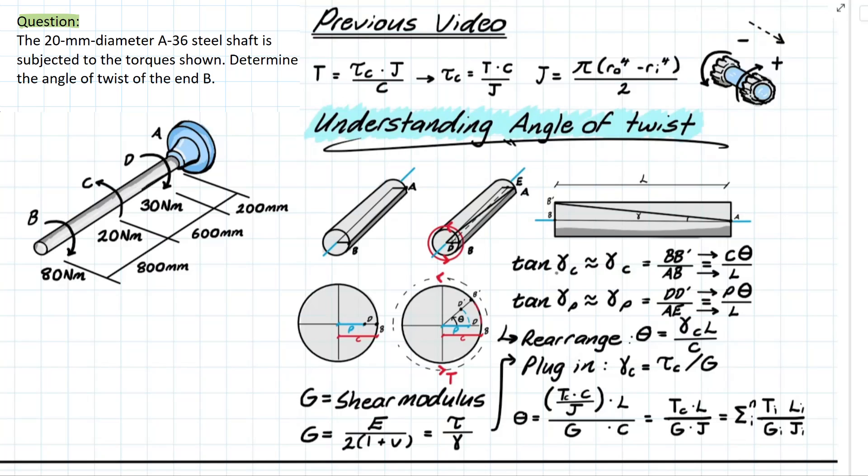Now the first thing that we need to cover is that this tan is going to be neglected for our case just for simplicity because the angle of twist generally created is a very very very small value.